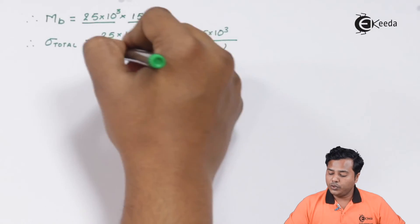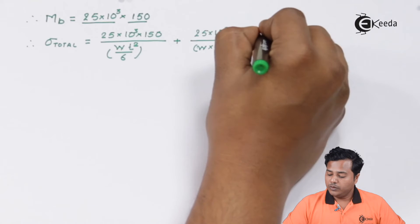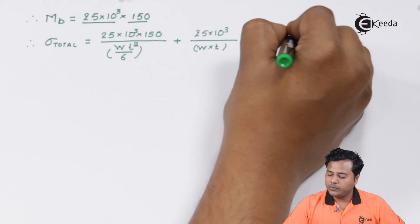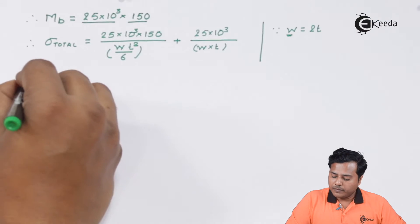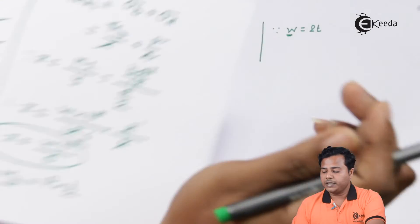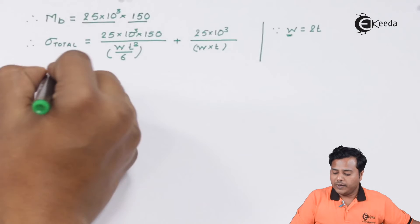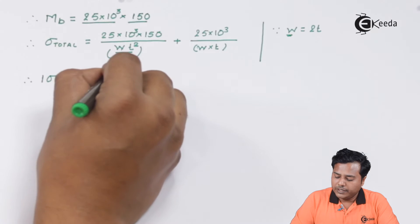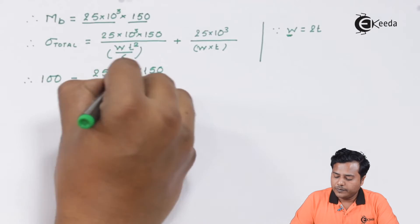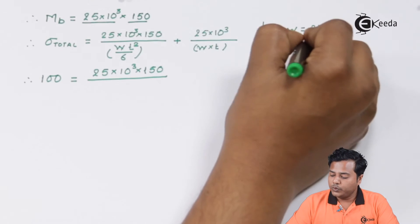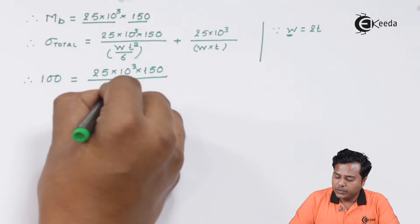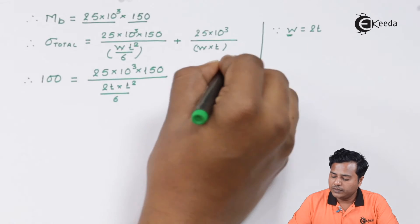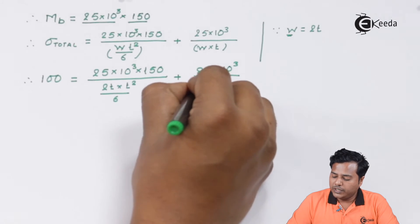Somehow we have got two unknowns and only one equation. What we know so far is W width is twice the T. So we will substitute value of W in terms of T. Therefore sigma total value, they have already given us the maximum sigma possible value is 100 MPa. So value comes out to be 100 = 25×10³×150 divided by, we are replacing W by 2T, so it becomes 2T×T²/6 plus 25×10³/(2T×T).